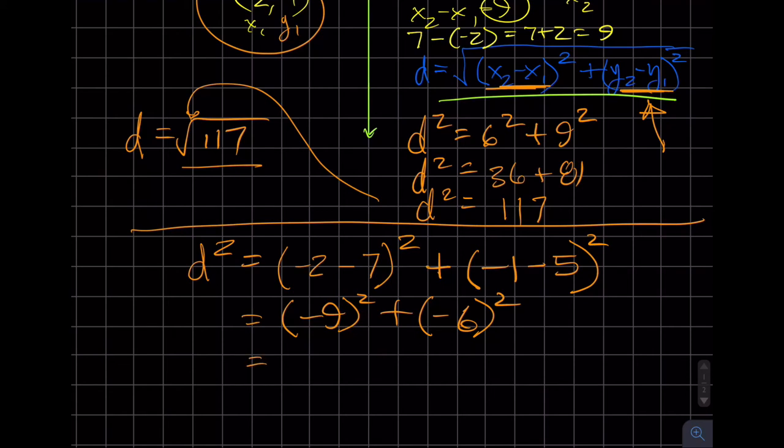So keep that in mind: you just have to take the difference of the x's and the difference of the y's, or count the boxes, whatever you want to do. But you need to find the horizontal distance between the two points and the vertical distance between the two points. So this still becomes 81 plus 36, which again I believe is 117. And so we get d is equal to the square root of 117.